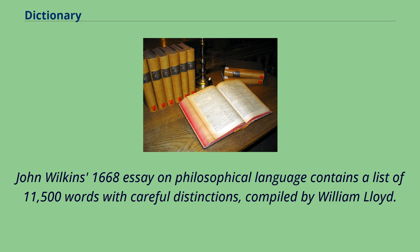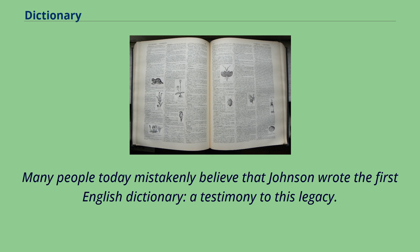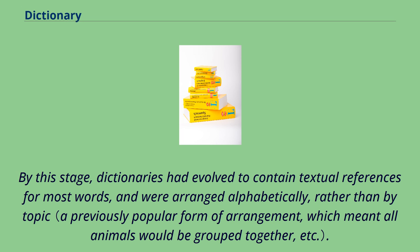John Wilkins' 1668 essay on philosophical language contains a list of 11,500 words with careful distinctions, compiled by William Lloyd. Elisha Coles published his English dictionary in 1676. It was not until Samuel Johnson's A Dictionary of the English Language that a more reliable English dictionary was produced. Many people today mistakenly believe that Johnson wrote the first English dictionary, a testimony to his legacy.